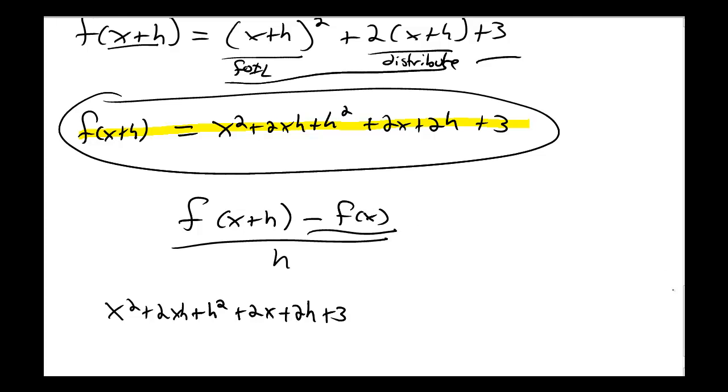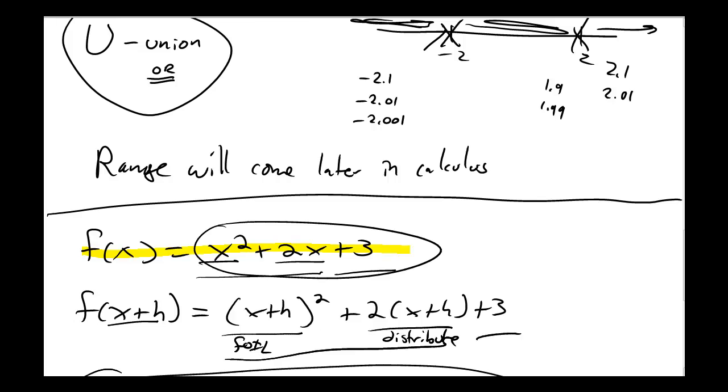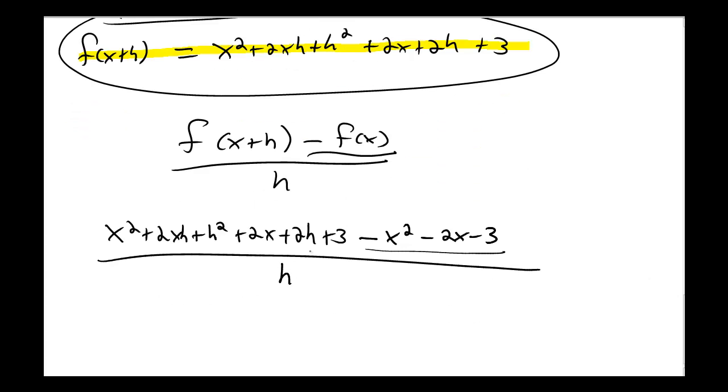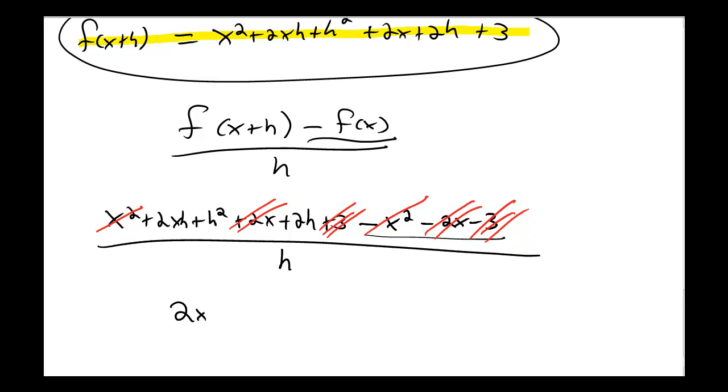I'm subtracting f of x, so I'm going to subtract f of x minus x squared minus 2x minus 3. Notice I distribute that minus through to each term of f of x. Everything is getting divided by h. Some cancellation happens. I have x squared minus x squared plus 2x minus 2x plus 3 minus 3. This leaves me with 2xh plus h squared plus 2h all divided by h.